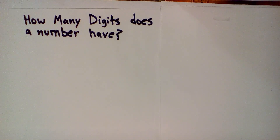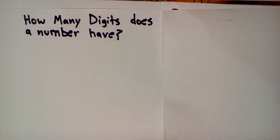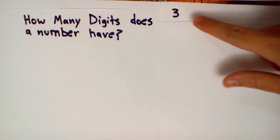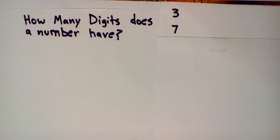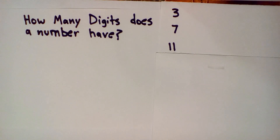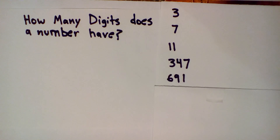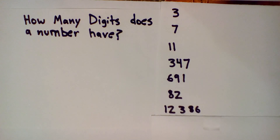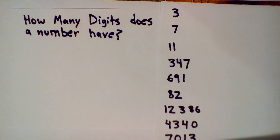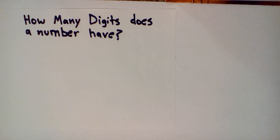You count the digits to the left of the decimal point. For example, how many digits does three have? Just one digit. Seven — one digit. Eleven — two digits. Two digits to the left of the decimal point. Three digits, three digits, two digits, five digits, four digits, four digits.